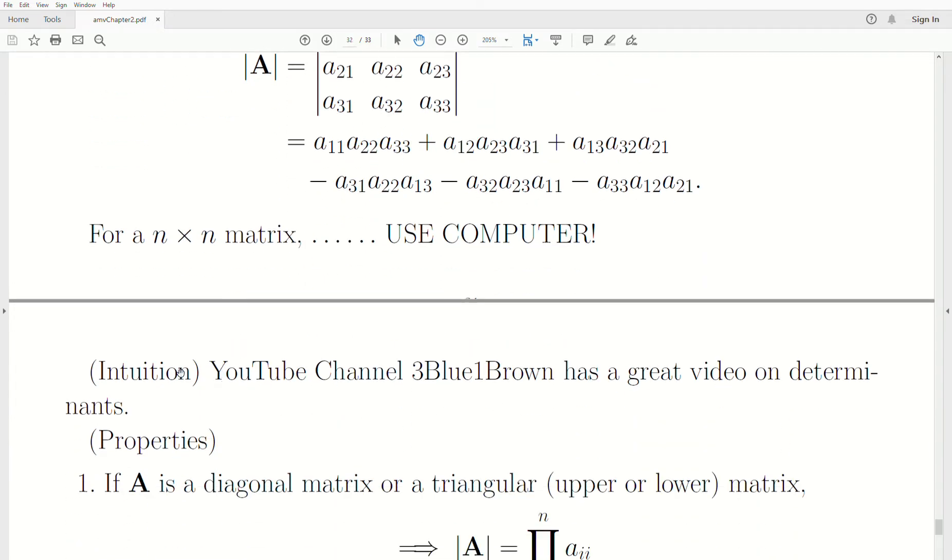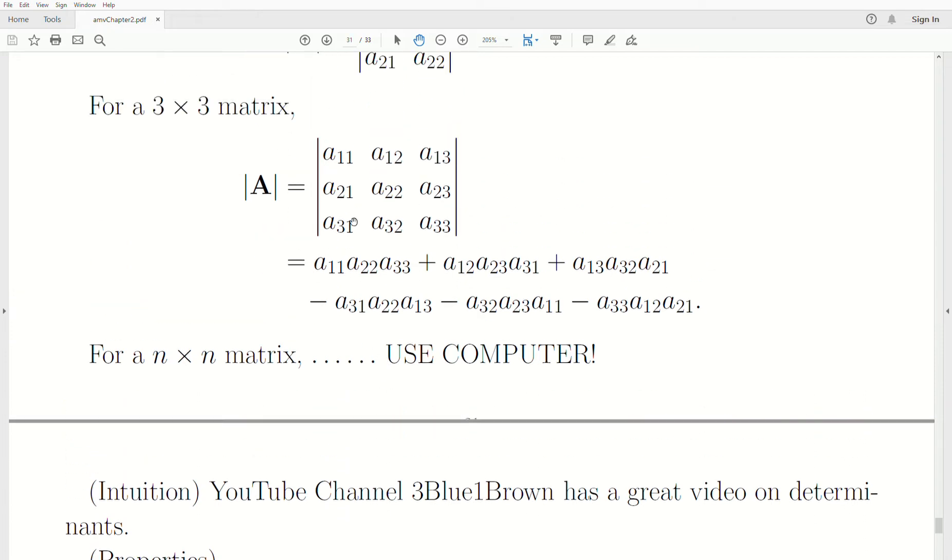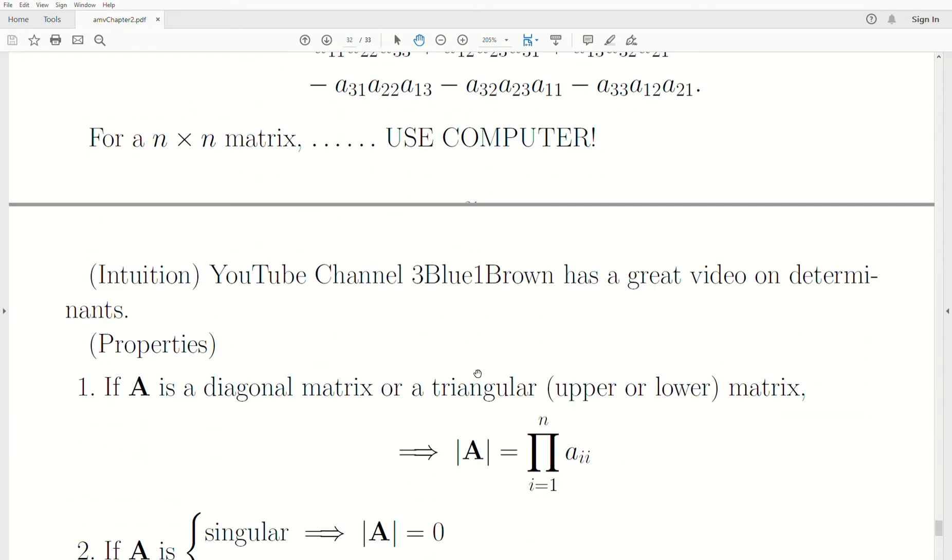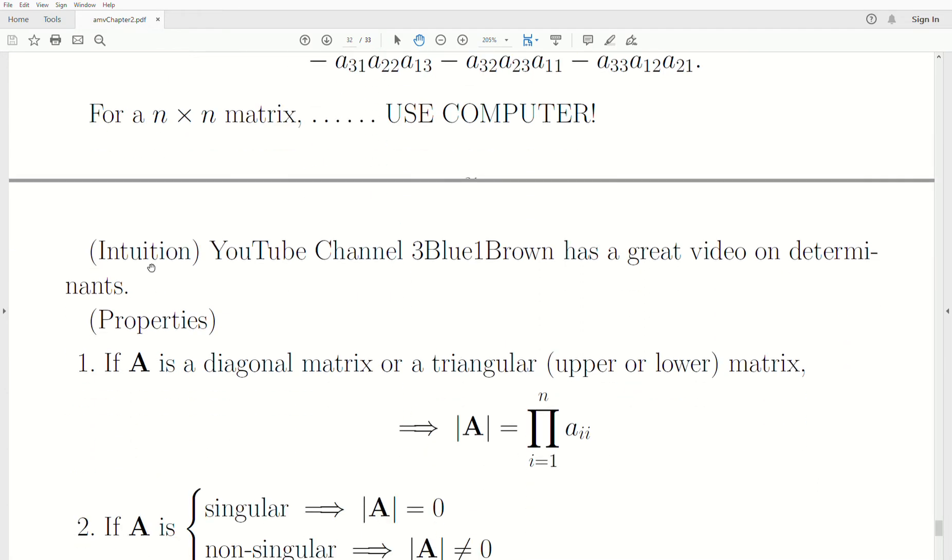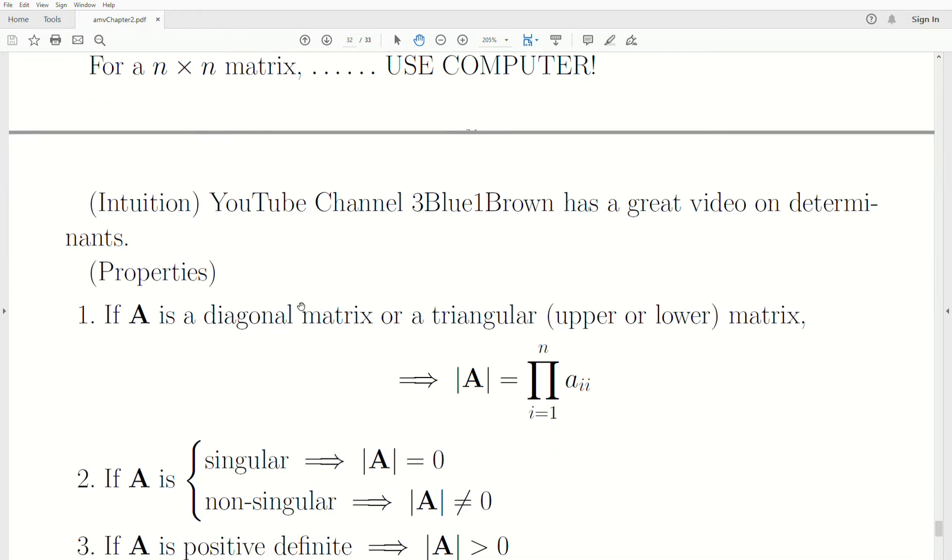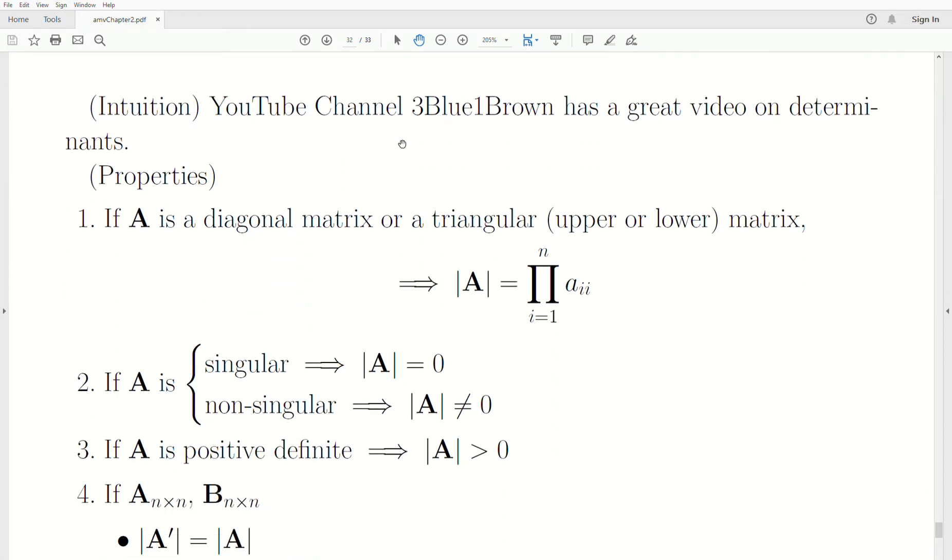And there's a great video on 3Blue1Brown on determinants that so describes this. Now, if you have a coordinate system and you transform it some way, so things either get stretched out or they get shrunk. And how much they get stretched out or how much they shrink is the determinant. So these columns of your matrix, the determinant of that tells us how much that transformation would shrink or expand. And I'm going to let you watch that video on that. It's such a great video. He's an amazing person who does a great job in explaining things.